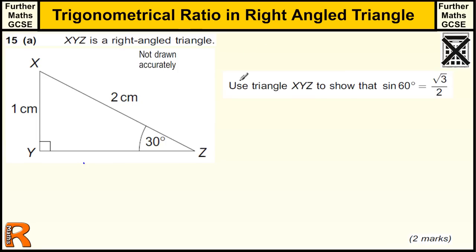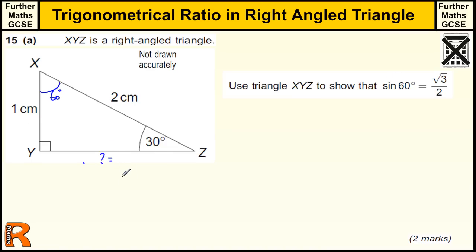The first thing we've got to do is use the triangle XYZ to show that sine 60 is root 3 over 2, but this triangle is a 30-degree triangle. What we need to realise is that this angle here, because the right-angled triangle, is 60 degrees. So when we're doing the sine of 60, we need to use a bit of Pythagoras, because we've got two sides.